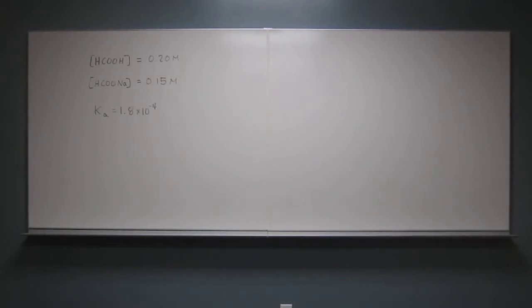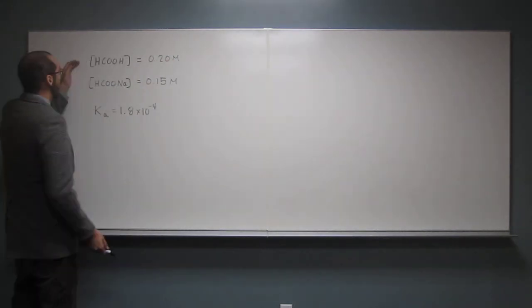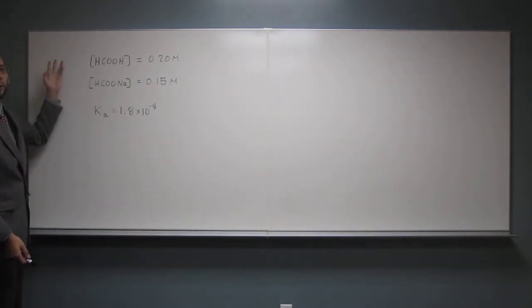Okay, so let's try this problem. It says calculate the pH of a buffer that is 0.2 molar in formic acid and 0.15 molar in sodium formate. And then it gives you the Ka for formic acid is 1.8 times 10 to the negative 4. So I wrote out the formulas for formic acid and sodium formate for y'all.